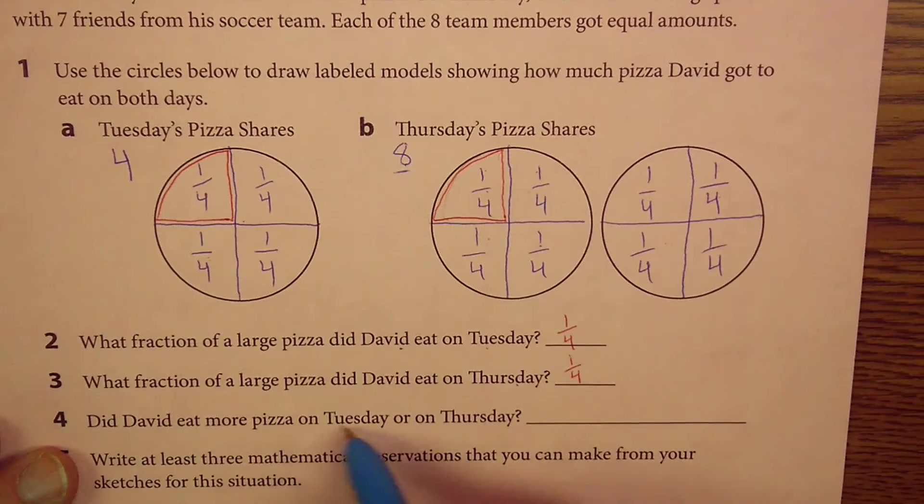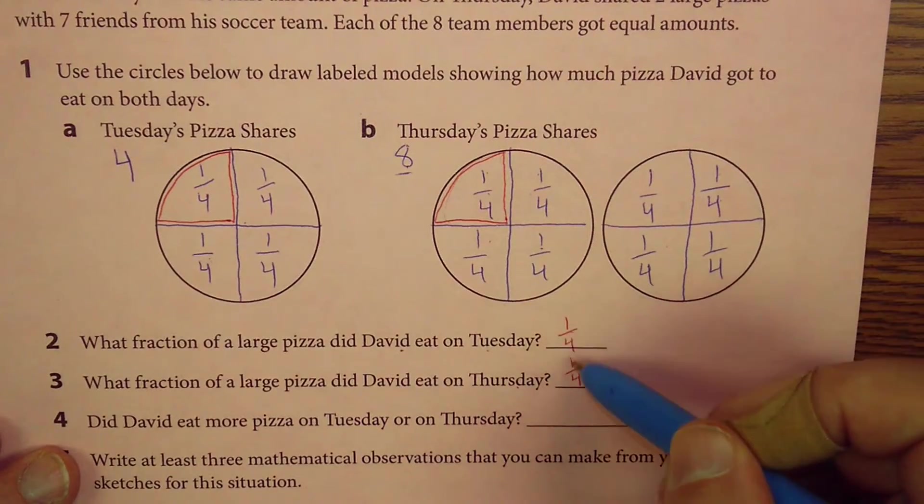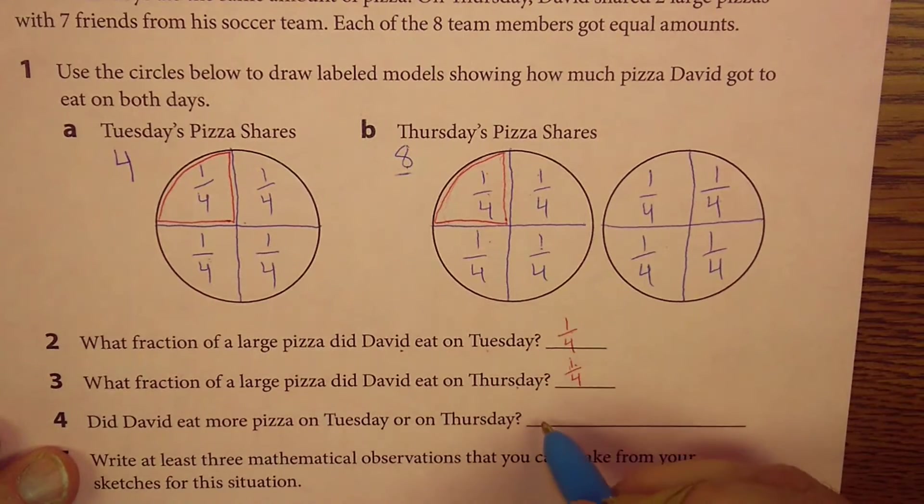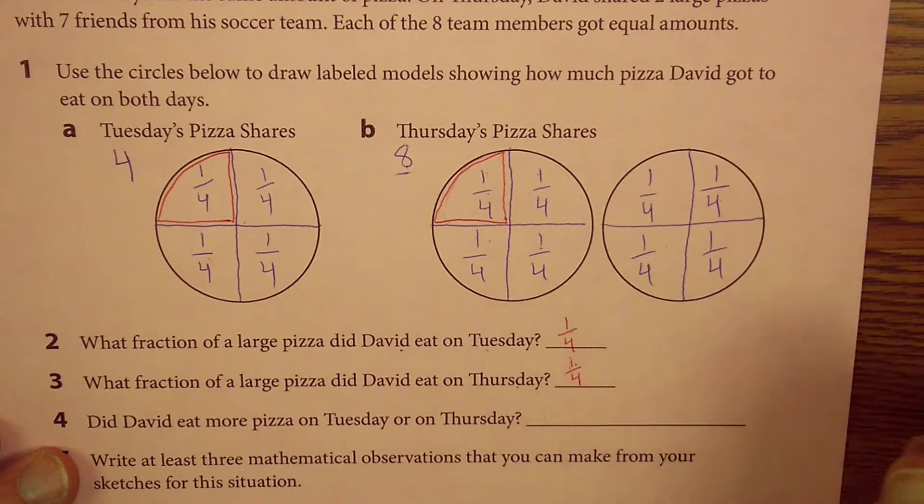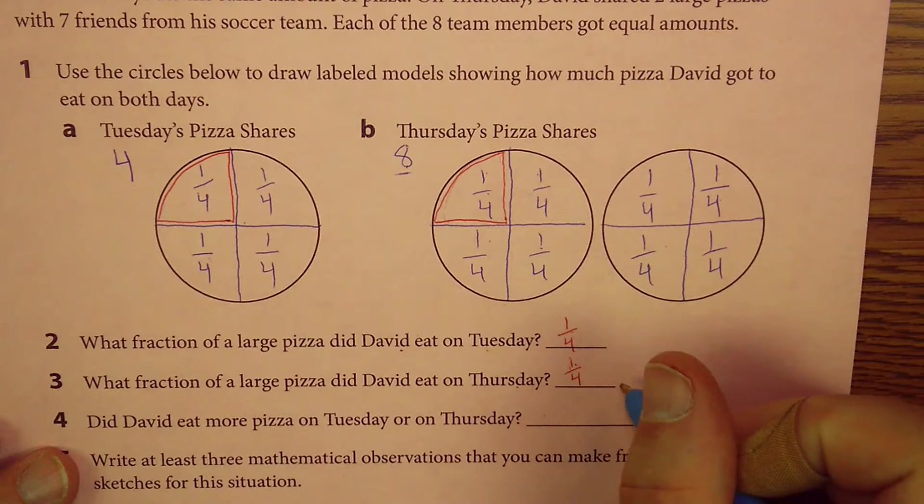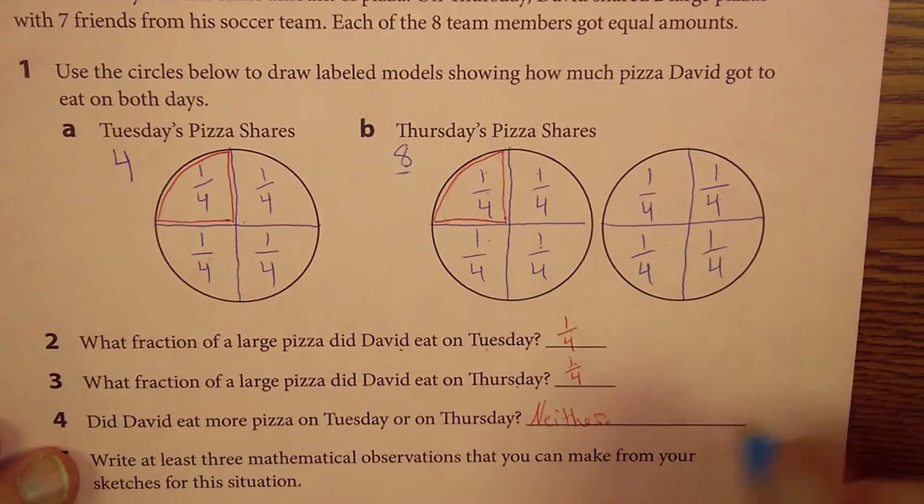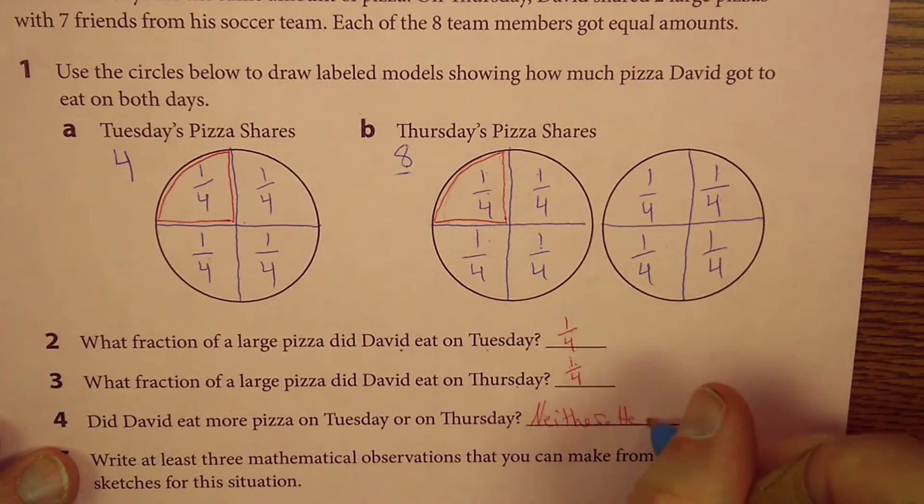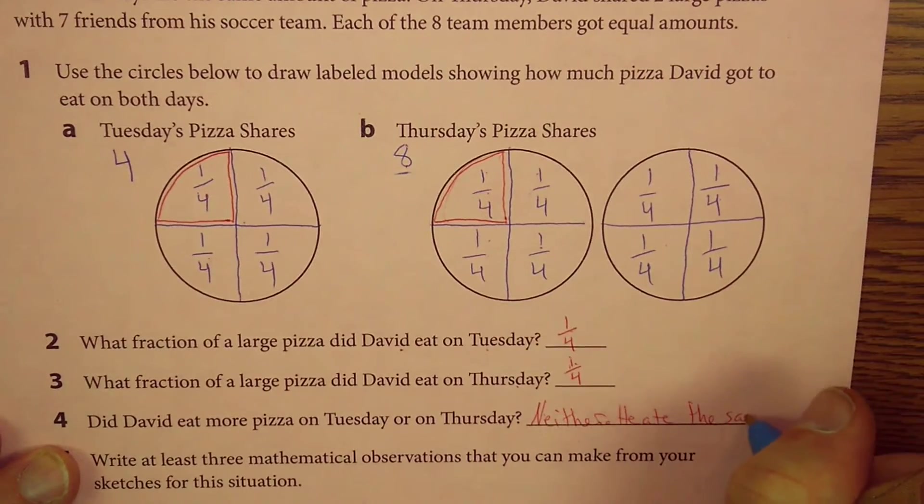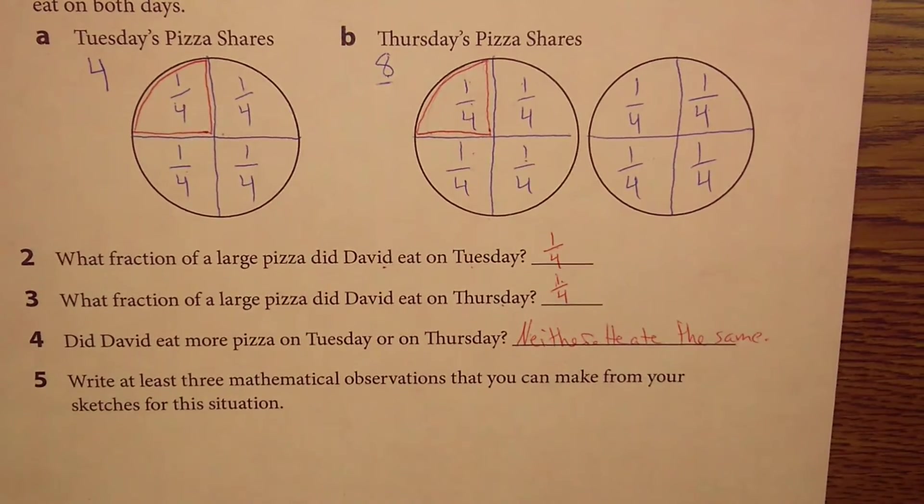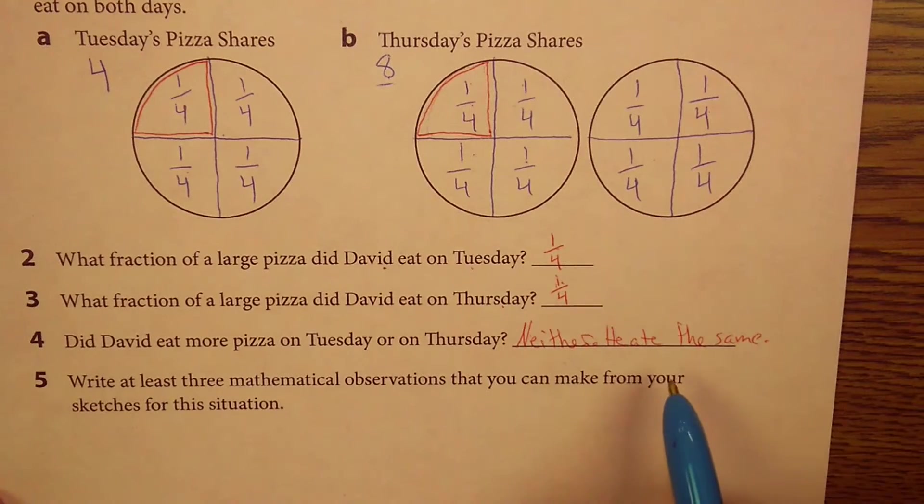The next question says, did David eat more pizza on Tuesday or on Thursday? Well, on Tuesday, he ate one-fourth of a pizza. On Thursday, he ate one-fourth of a pizza. So, no. He ate the same amount. So, you could say, I was thinking of the best way to answer that. You could say neither. He ate the same. That would be okay.